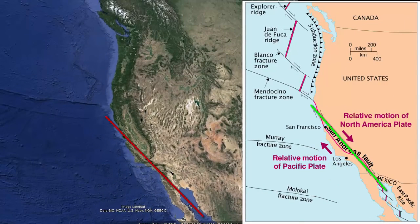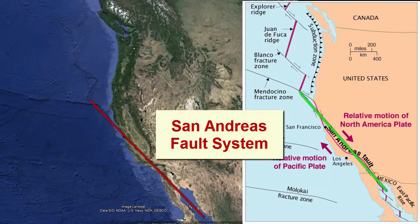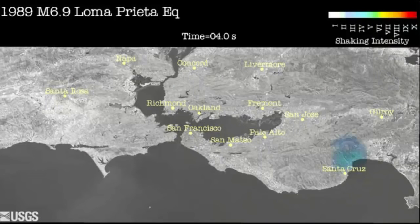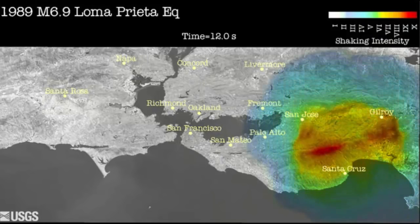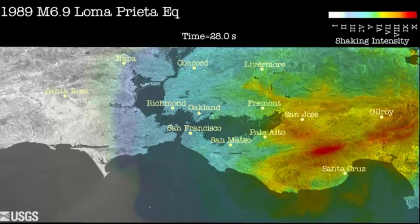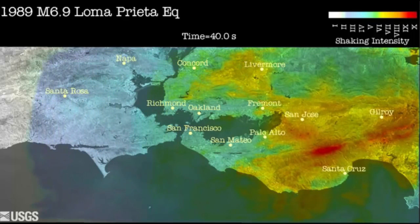This long transform boundary that connects these two sections of ocean ridge is known as the San Andreas Fault System. Those of us who live along its path are familiar with its associated earthquake hazards. The Loma Prieta earthquake in 1989 was one of the most recent large earthquakes — the magnitude 6.9 quake caused significant shaking and damage from Santa Cruz to San Francisco as it released built-up stress related to the transform plate motion.